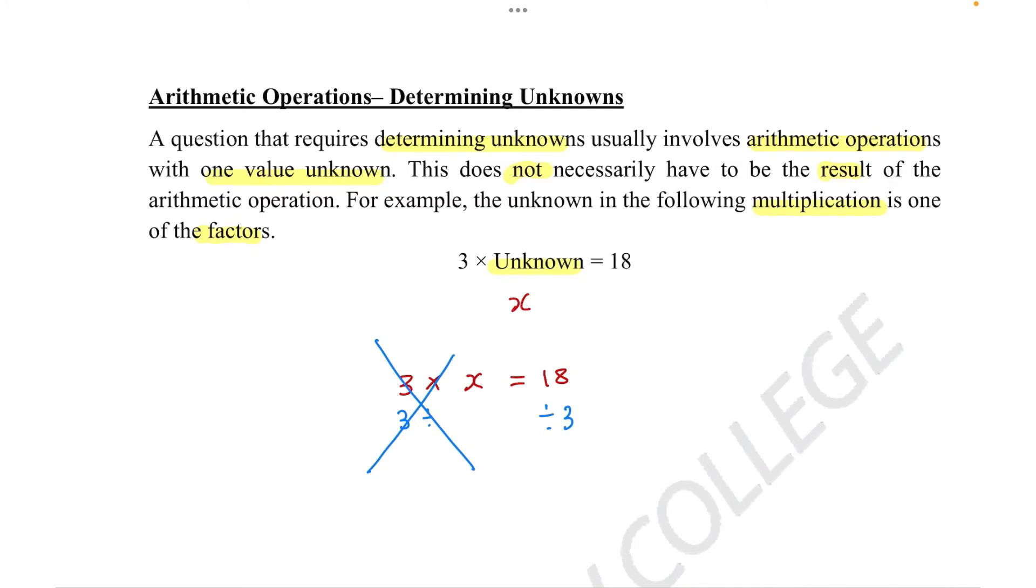Since 3 times divided by 3 is 0, we just get x equals, and then we get 18 divided by 3. Now we just need to figure out what 18 divided by 3 is. And we know that's 6. So x equals 18 divided by 3, which equals 6. So the answer will be 6.